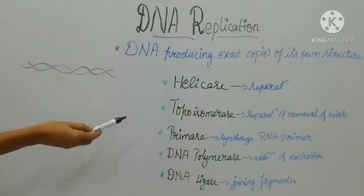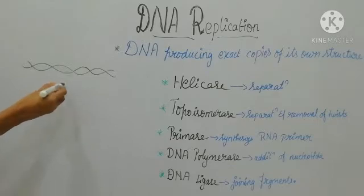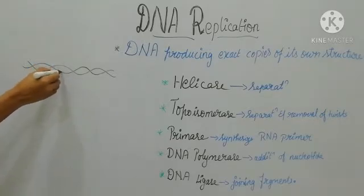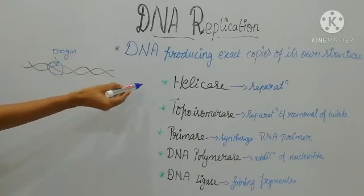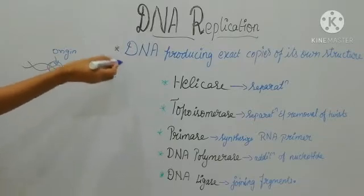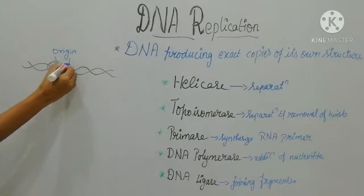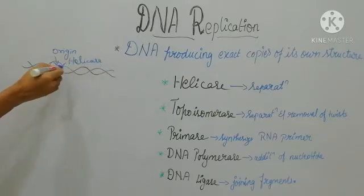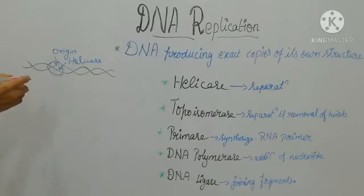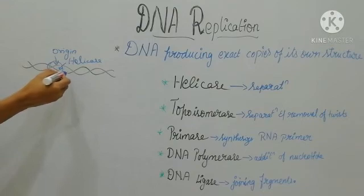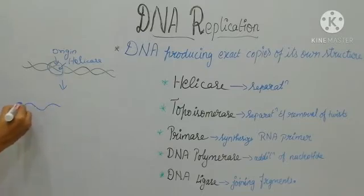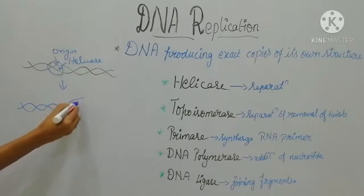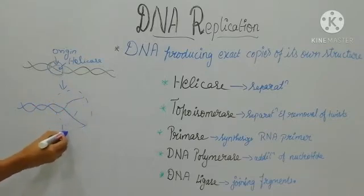This is the double stranded DNA. The place where replication is going to start in this DNA is called the origin of replication. The first enzyme is helicase. This helicase enzyme will come and bind at the origin of replication site. Its role is to separate the strands — it will open the double stranded DNA — and the DNA will form the replication fork.